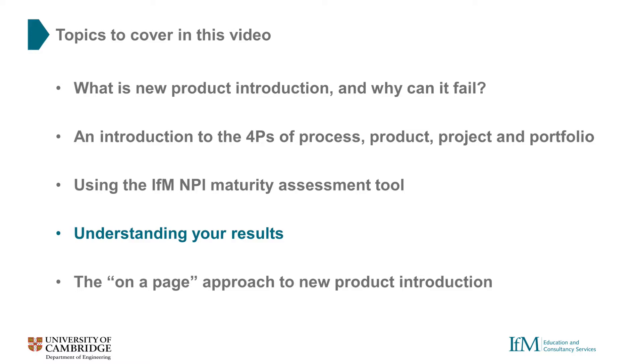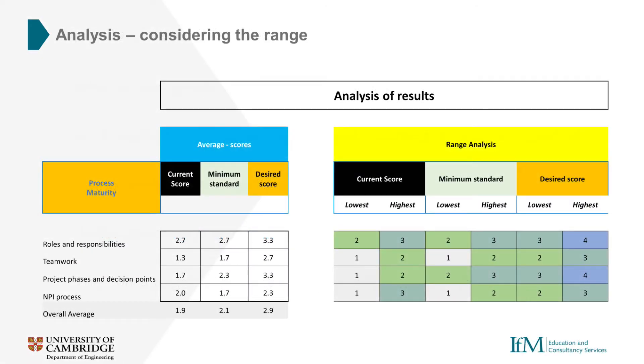Having assessed our process maturity, we can now do the same for each of project, product, and portfolio maturity using the templates provided. Once each individual in your team has scored each of the four P's, we can combine the scores together and start to review the results. Before we look at the average responses and draw some conclusions, it's a good idea to look at the range of responses received from the team members involved. For example, we can see that the current scores for overall process maturity range from three right down to one. You'll need to talk to the team members to understand the differences in their perspectives and see how they can be resolved.